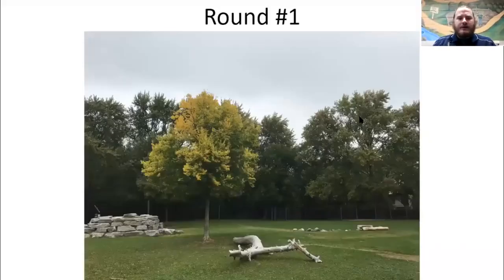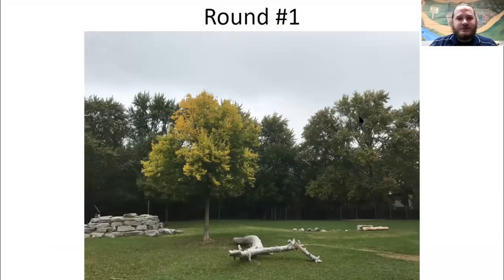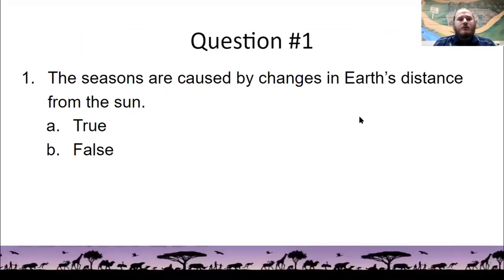So, round one. And these photographs you'll see are all photographs from the Detroit Zoo, showing some of the amazing things you'll see this fall, like this tree changing colors. So, be sure to come out and visit so you can see that. And also, be sure to observe your own local neighborhood for some amazing fall colors. So, question number one, the seasons are caused by changes in Earth's distance from the sun. Is that true? Or is that false?